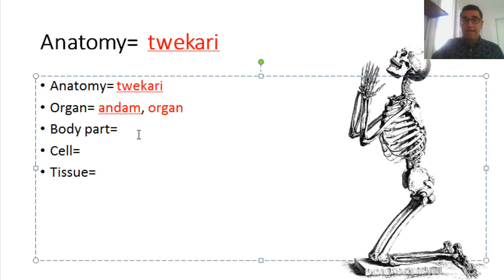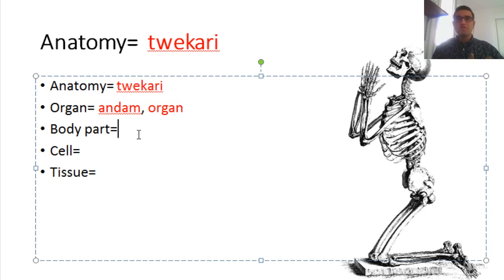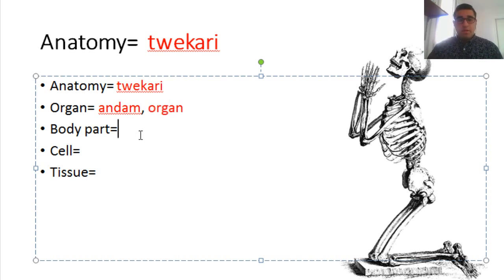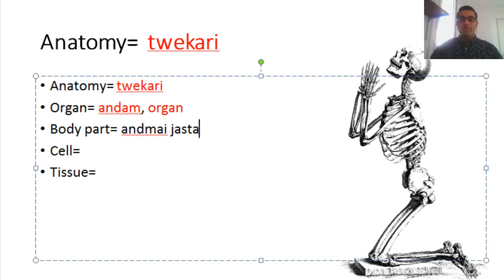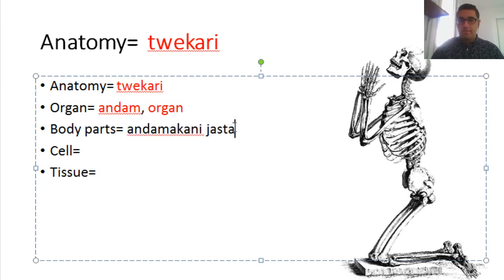In the biological context, organ means a body organ — like hands or heart. Body part in Kurdish is andami jastha, or andami lasha. Andami jastha means a member of the body, or an organ of the body. If you make it plural, you say andamakani jastha, which means body parts.